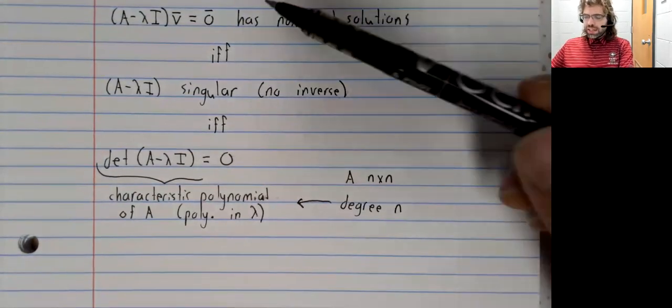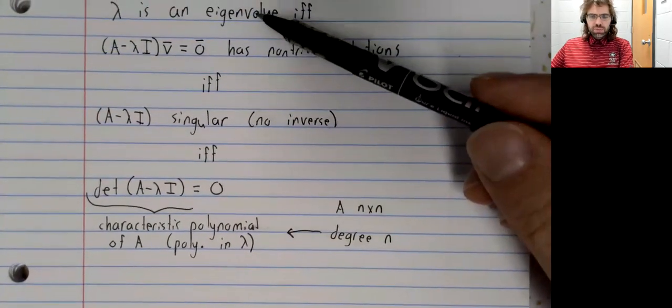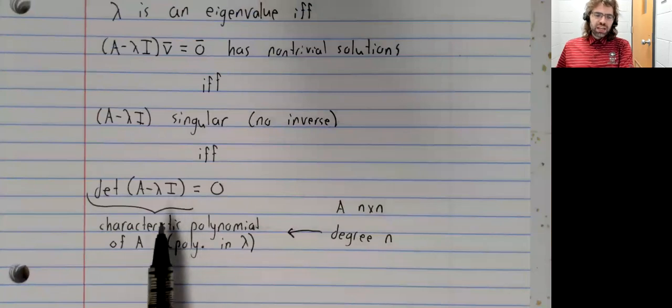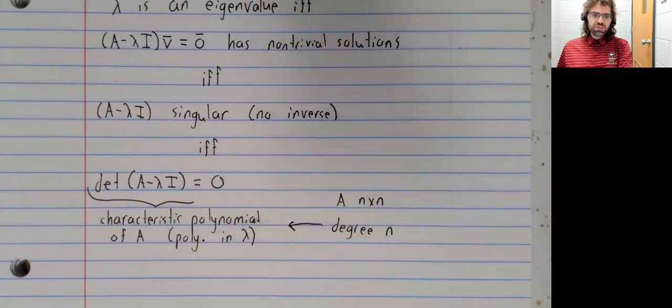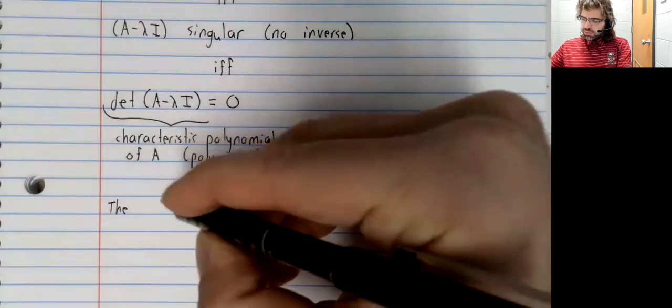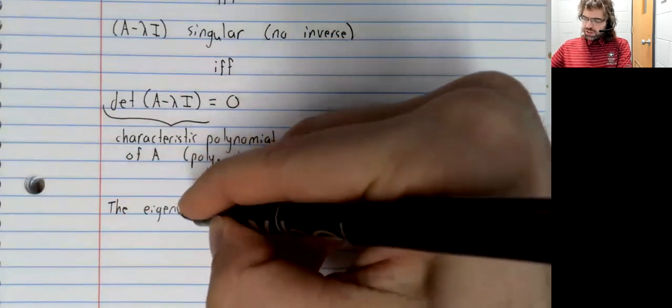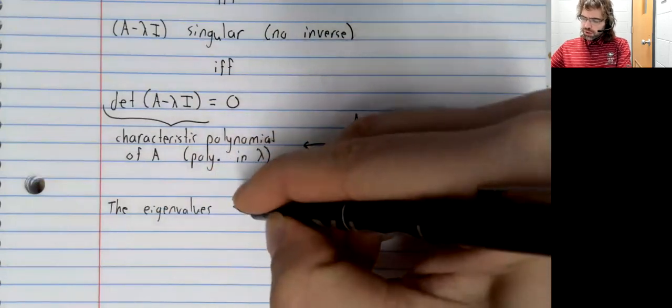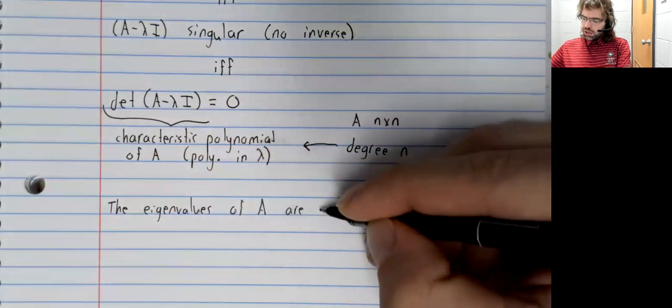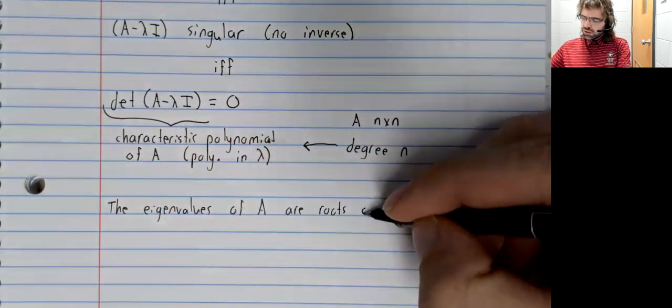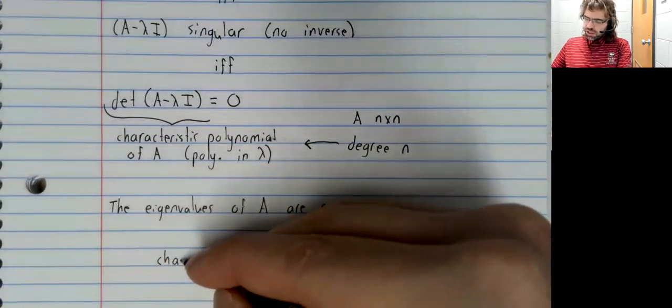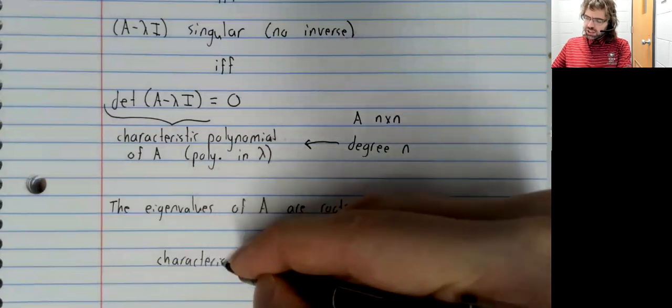So the eigenvalues of a matrix... the characteristic polynomial equals zero. In other words, the eigenvalues of A are the roots of the characteristic polynomial